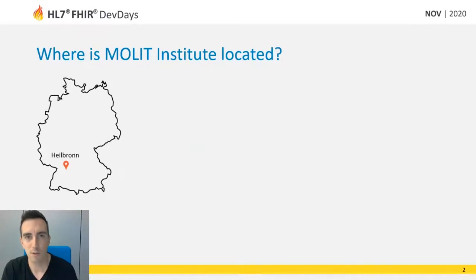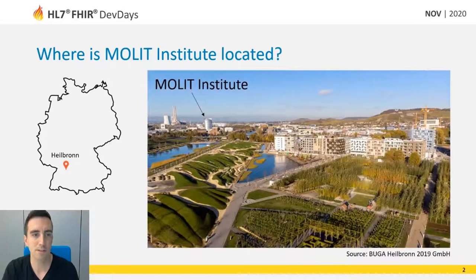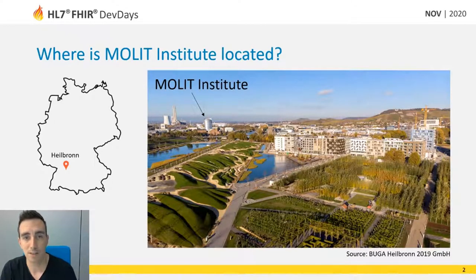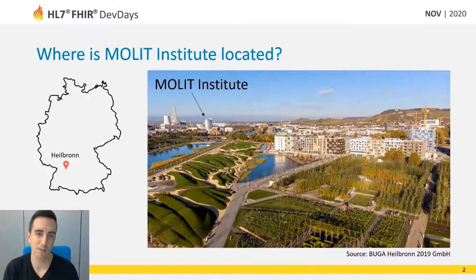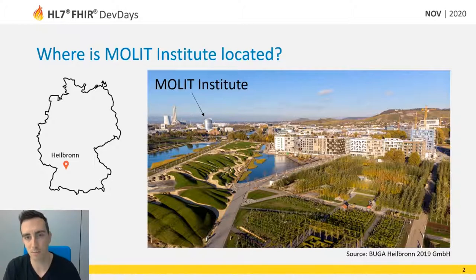First, a small overview. The Molit Institute itself is located in Heilbronn in southern Germany. We are located within this tower that you see here, and apart from the really nice view, we also have the clinics very close — just up a little hill to the left — so the channel is really short towards the clinic.